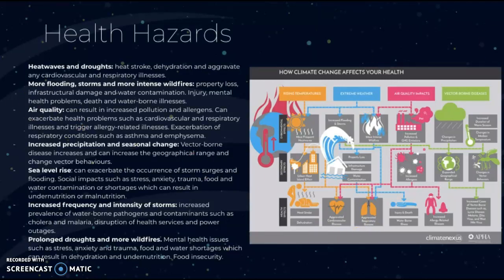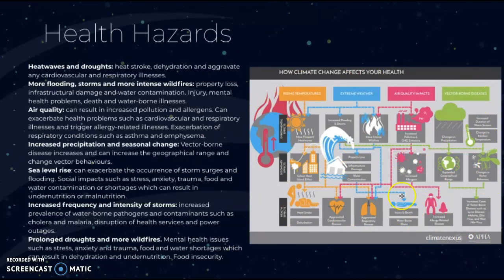This diagram shows how rising temperatures can have all these different effects — extreme weather, air quality, and vector-borne diseases — and they all interlink. This is a good representation of the health hazards that can come about from climate change in terms of people and places.